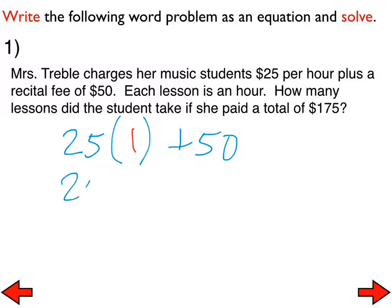If the student took two hours of lessons, then we would figure out how much it costs like that, 25 times 2 plus 50. But, you know, we could play this guessing game all day long, and it wouldn't take us long to find the answer to this one, but if that 175 was a much larger number, it would take a while before we could figure out what that is. So what we're going to do instead is we're going to try and figure out what the equation would look like.